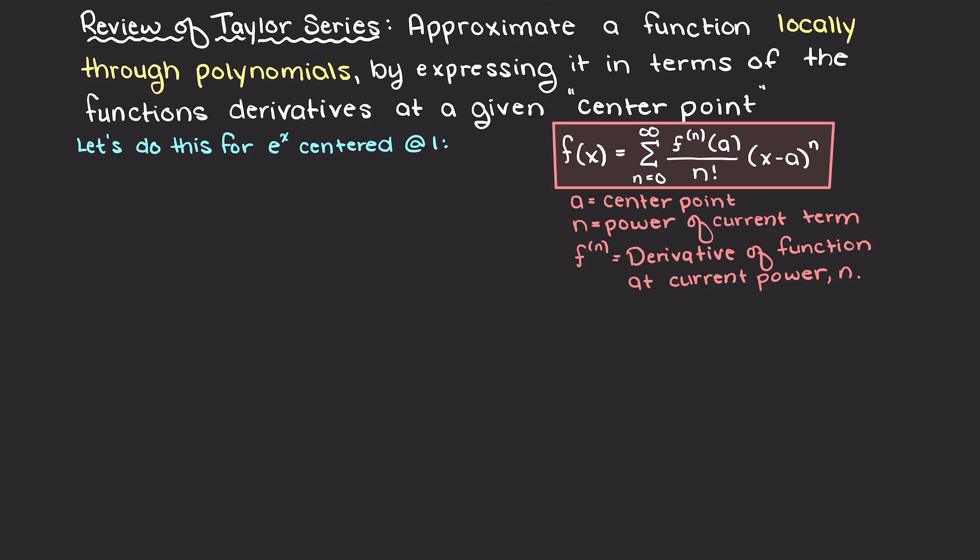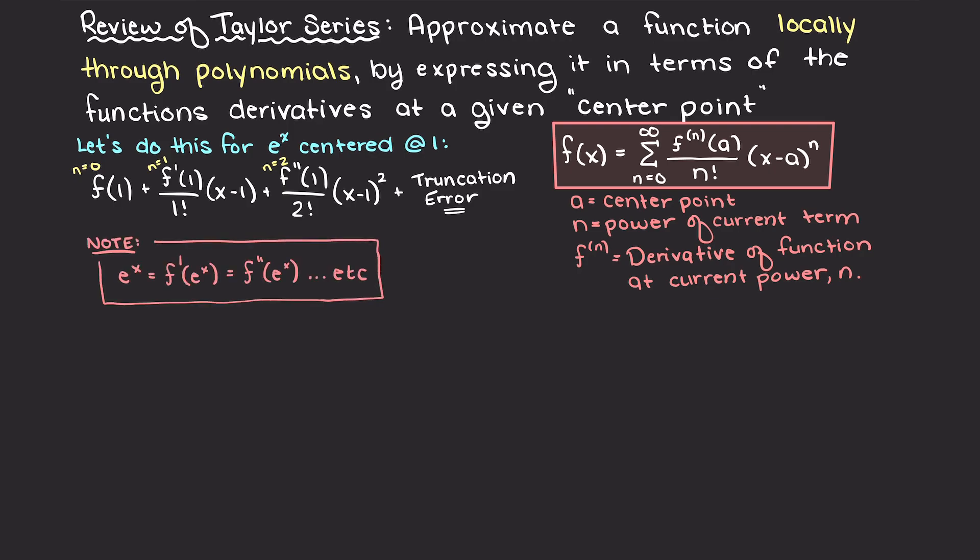Firstly, we begin at n equals 0, then we will go back through and simplify after. Then we will move to our higher power terms. Then, from here you could continue to add terms, hence the definition of Taylor series as an infinite sum. But we will cut it off here, and we could say that our next term would be of order to the third power. But we'll talk about that shortly.